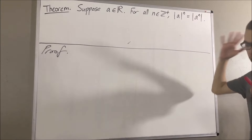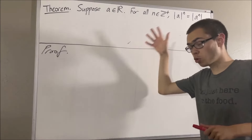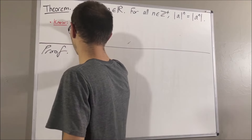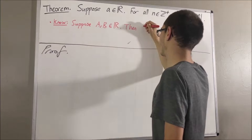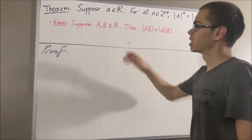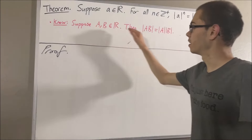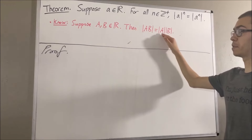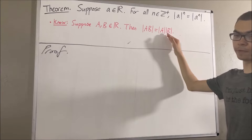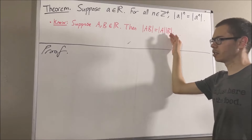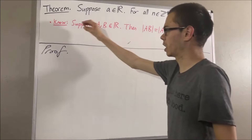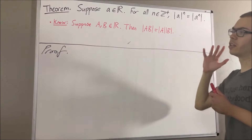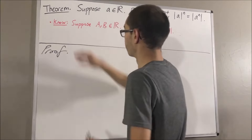Now, in proving this theorem, we have already proven the following result. Suppose a and b are real numbers. Then the absolute value of a times b is equal to the absolute value of a times the absolute value of b. I'll leave a link to the video for this in the description below. Now let's get into proving this theorem.